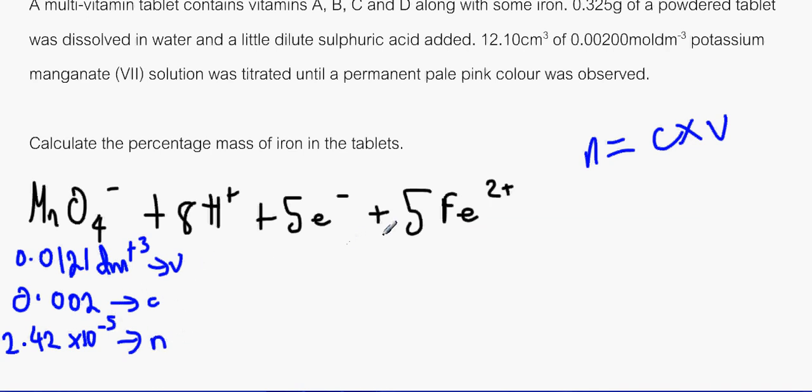Now over here we need to find out how many moles of iron reacted with the manganate. And as you can see here, the ratio, the stoichiometric ratio over here is 1 to 5. So that means for each one of these, five of these reacted. So therefore what we need to do is to multiply that by 5, and that would make 1.21 × 10⁻⁴. So we've got the amount of moles of this reacted.